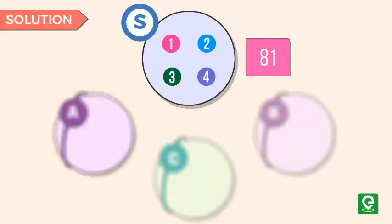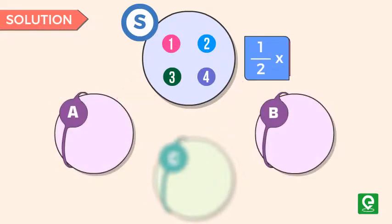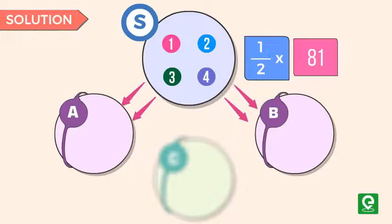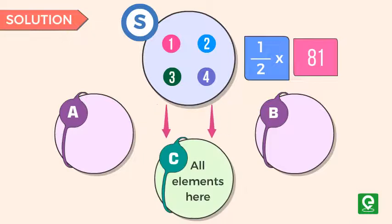Therefore, the total number of unordered pairs will be half of the total number we calculated above. There is one more particular case we need to consider in which set A and set B both are empty. Here we can see that all elements are present in the imaginary set C.